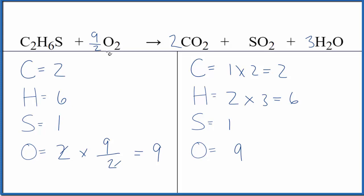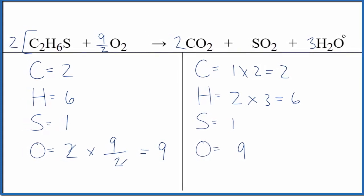Some teachers don't like having a fraction. So we could multiply everything, all of the coefficients by two. We do that, we get, so this would be the same ratio, except now we have whole numbers. So that's how you balance the equation C2H6S plus O2.